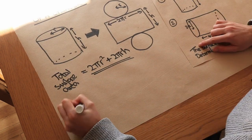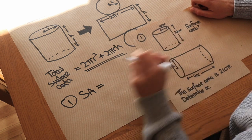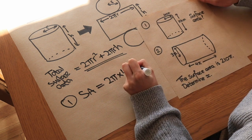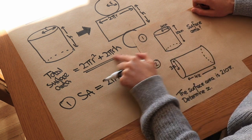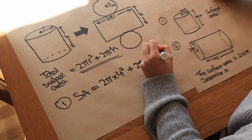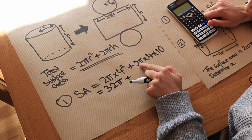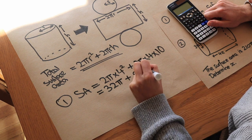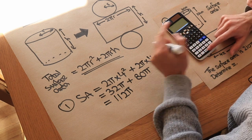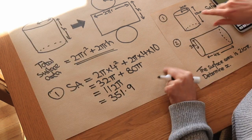Let's use that formula to solve this problem. For this cylinder, the surface area SA equals two circles: 2 × π × 4², plus the curved surface area: 2π × 4 × 10. Simplifying: 4² is 16, times 2 is 32π. Then 2 × 4 × 10 is 80, giving 80π. So 32π + 80π = 112π, which gives us 351.9 cm².